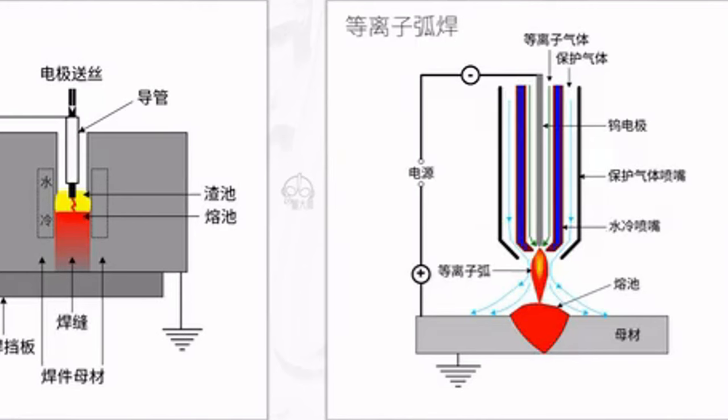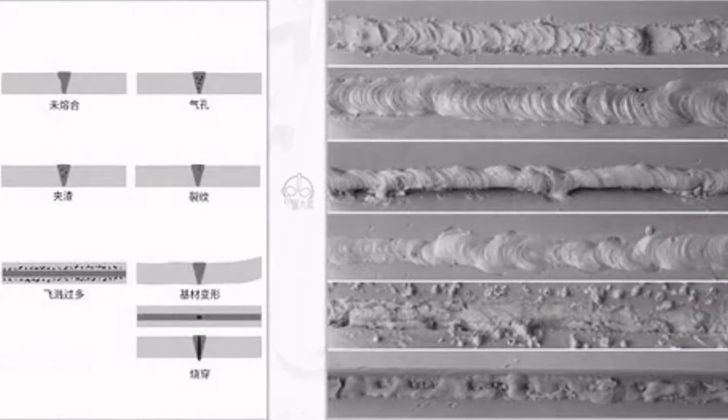Plasma welding evolved from TIG welding. In TIG welding, the arc is not constrained, and as the current increases, the arc column diameter also increases. The plasma arc uses an externally constrained water-cooled nozzle to prevent the arc column from freely expanding, forming a plasma arc with very high energy and temperature. It's similar to TIG welding, like a water pipe with a high-pressure nozzle, while the other doesn't. Plasma arc welding has strong penetration, capable of welding 10mm thick stainless steel plates in one pass with uniform weld seam shape and good quality, suitable for welding precision parts.